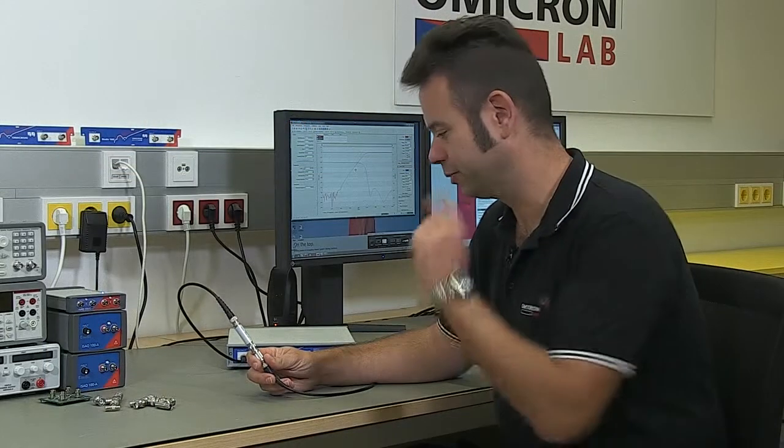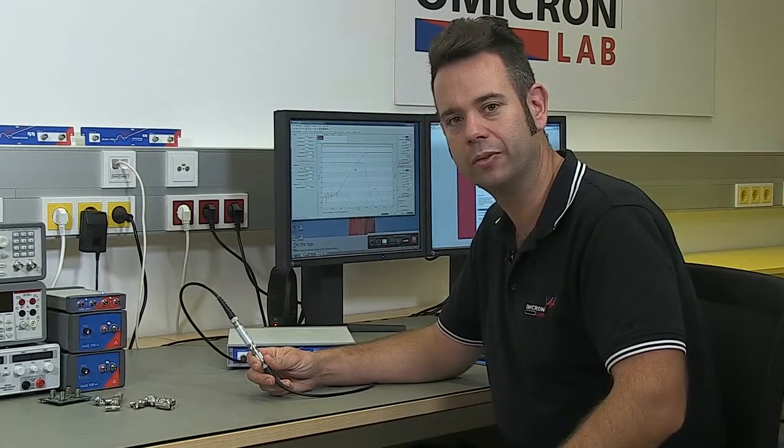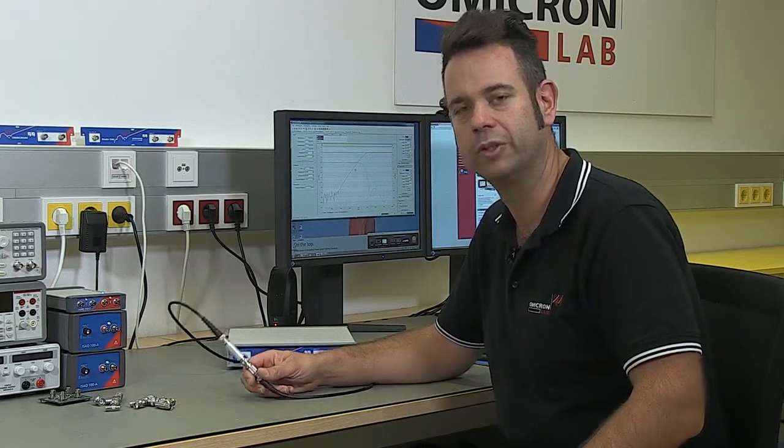I will now measure the scattered parameters of this 25 megahertz high pass filter which is already connected to the Bode 100. Now I need to set up the Bode 100 to perform the measurement.